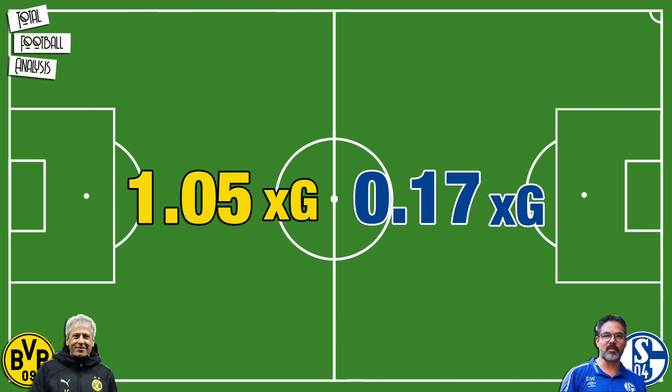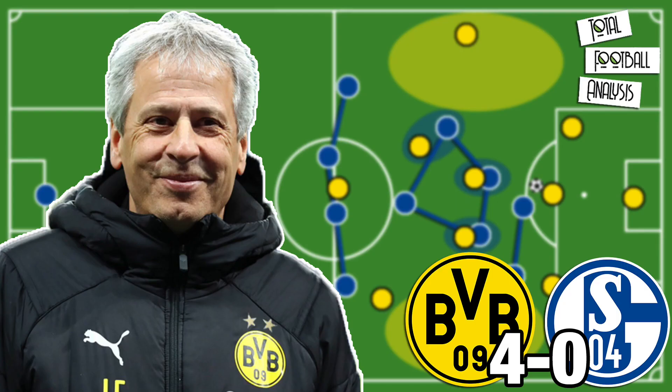To sum up, Dortmund outclassed Schalke in the first half, generating over one expected goal and limiting Schalke to just 0.17. Schalke's press was uncoordinated and poorly executed, and was relatively simple to overcome. As this analysis shows, Dortmund certainly had players capable of creating these solutions to the press. If you liked this video, give it a thumbs up and check out the other videos on our channel. Subscribe for free so you don't miss any of our videos.